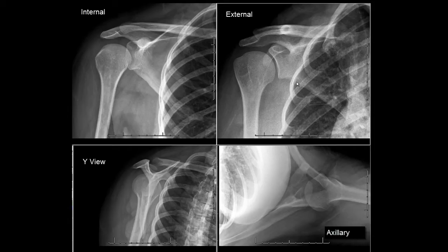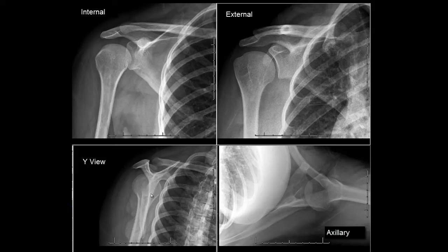This is a view in external rotation, obtained fairly tangential to the joint space. Notice the difference in the appearance of the humeral head in external rotation versus internal rotation — this will be helpful in identifying a patient with a posterior shoulder dislocation. Here is the Y view, with the coracoid process, the acromion, the clavicle, the scapular body, and the glenoid, which projects within the mid portion of the humeral head.